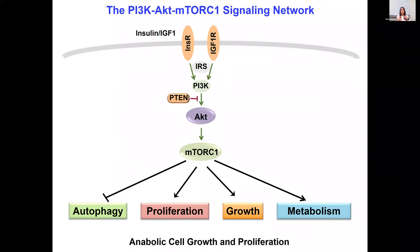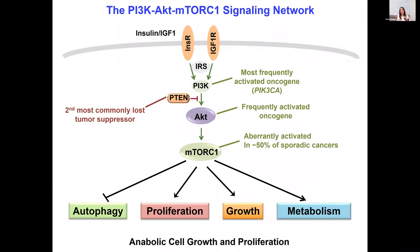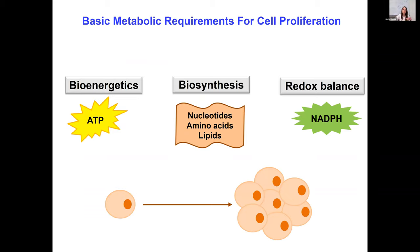This pathway is a major oncogenic signaling pathway, and it's very unique because every single node in the pathway is either activated or lost in cancer. For example, PI3 kinase is one of the most frequently activated oncogenes. AKT and mTORC1 are also known to be aberrantly activated in cancer. PTEN is a tumor suppressor and is the lipid phosphatase, which is commonly lost in cancer. Knowing that this pathway regulates metabolism as well as cell growth and proliferation, from a metabolic point of view, cancer cells need to fulfill three basic metabolic requirements in order to proliferate.